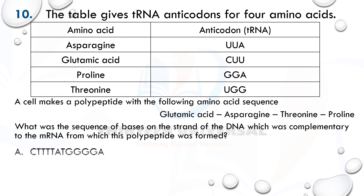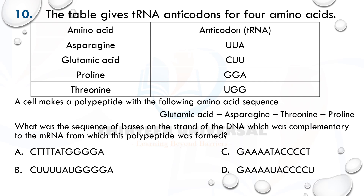Question ten: the table gives tRNA anticodons for four amino acids. The cell makes a polypeptide with the following amino acid sequence: glutamic acid, asparagine, threonine, proline. The question asks for the sequence of bases on the strand of DNA complementary to the messenger RNA from which this polypeptide was formed. Remember — the anticodon of tRNA is similar to the base triplet of DNA because both are complementary to the messenger RNA.